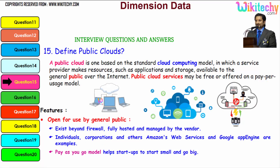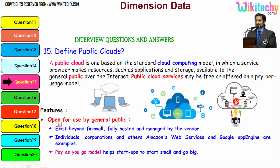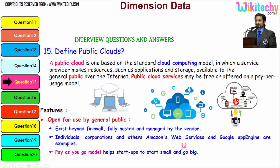Moving towards the public cloud definition: a public cloud is based on the standard cloud computing model in which the service provider makes resources such as applications and storage available to the general public over the internet. Public cloud services may be free or offered on a pay-per-usage model. Features of a public cloud include: it is open for use by the general public, it exists beyond the firewall, it is fully hosted and managed by the provider, and web services and Google App Engine are typical examples.